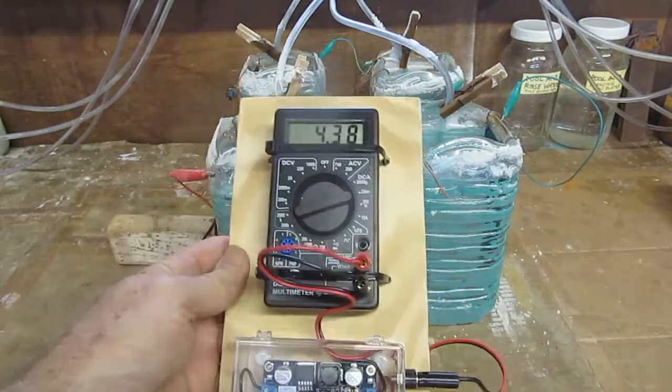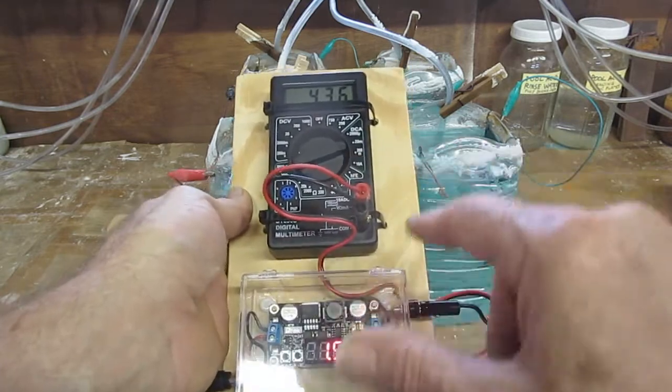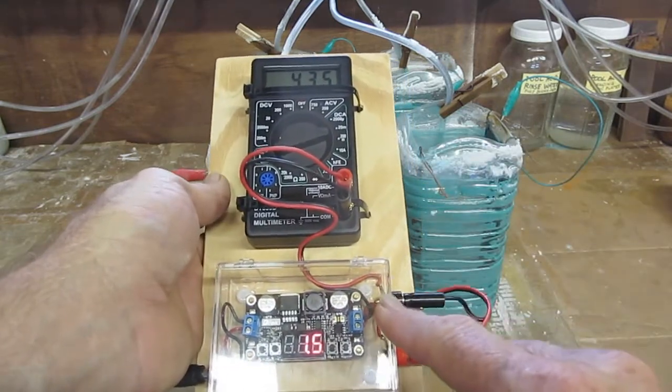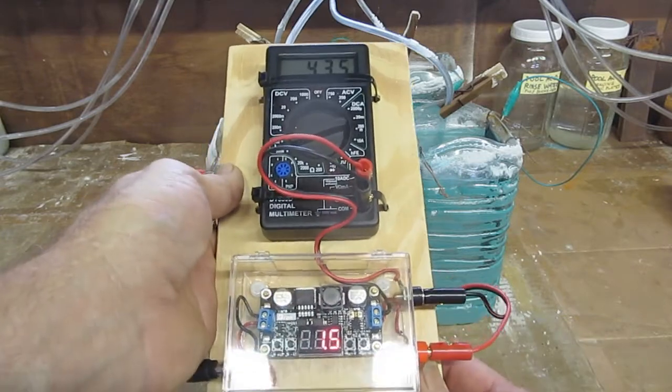So in order to measure current, the multimeter has to be connected in series to the output, one of the output leads. So that's the way it has to be connected.